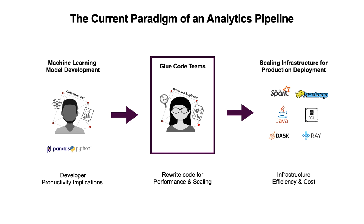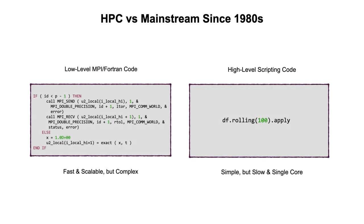Let's talk about the background of scalability and performance for data analytics and related areas. Since the early 80s, the high-performance computing, or HPC, community has been developing applications very differently than mainstream enterprises. In the HPC community, typically HPC experts or PhDs specializing in HPC write very low-level code with MPI, Fortran, and C++. The resulting programs are very fast and scalable and can run on huge numbers of cores. For context, the largest supercomputers have millions of cores. But the issue is that these programs are pretty complicated and take several years or even decades to develop, so this approach is not practical for a lot of applications.